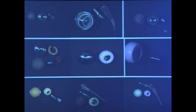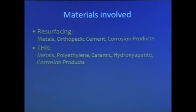There is a tremendous permutation and combination of shape, size, trunnion, and materials. I don't know where we are going, but if you don't examine the histology, how would you know what is really happening? In resurfacing, the materials involved are metals, cement, and corrosion products. In total hip replacements — metals, polyethylene, ceramic, hydroxyapatite, and corrosion products.